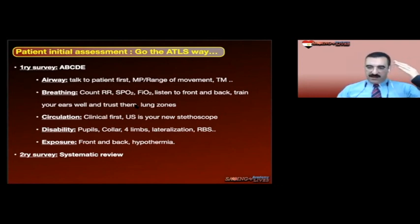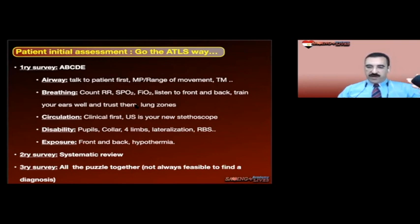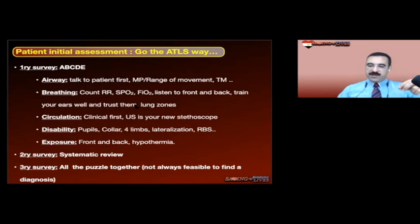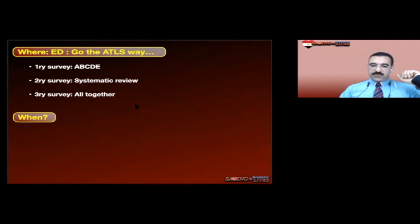Secondary survey is systematic — we'll go through that. Tertiary survey: once you've taken history, examination, and investigations in detail, do the tertiary survey maybe two, three, or four hours later. Look if you missed anything in the primary or secondary survey. It's not always feasible to make a diagnosis in the first few hours. Repeat and discuss with different colleagues — senior or junior — to avoid tunnel vision and bias, then complete the tertiary survey.